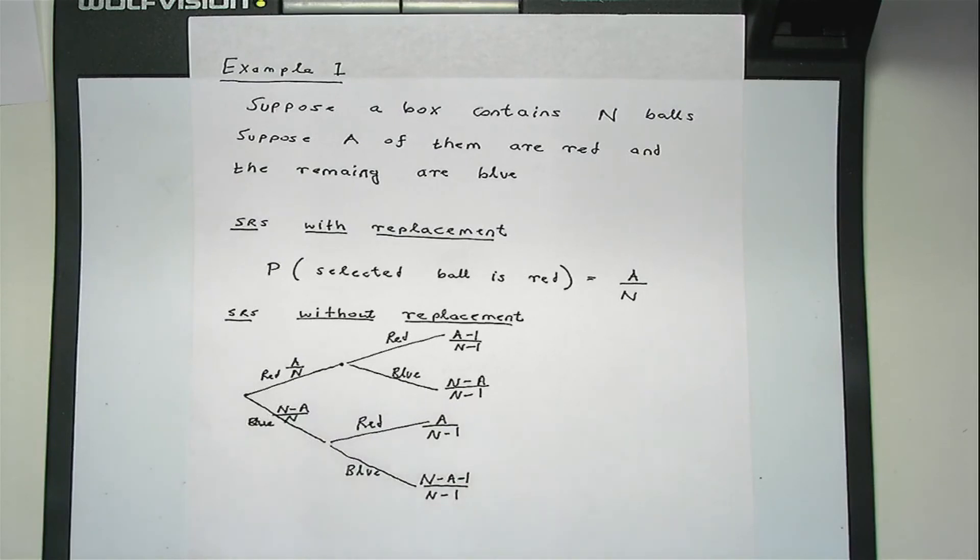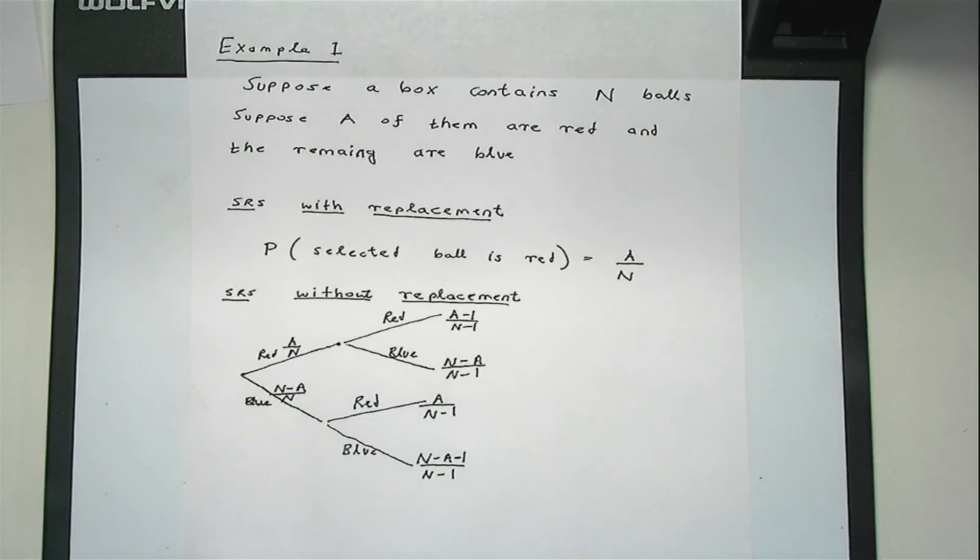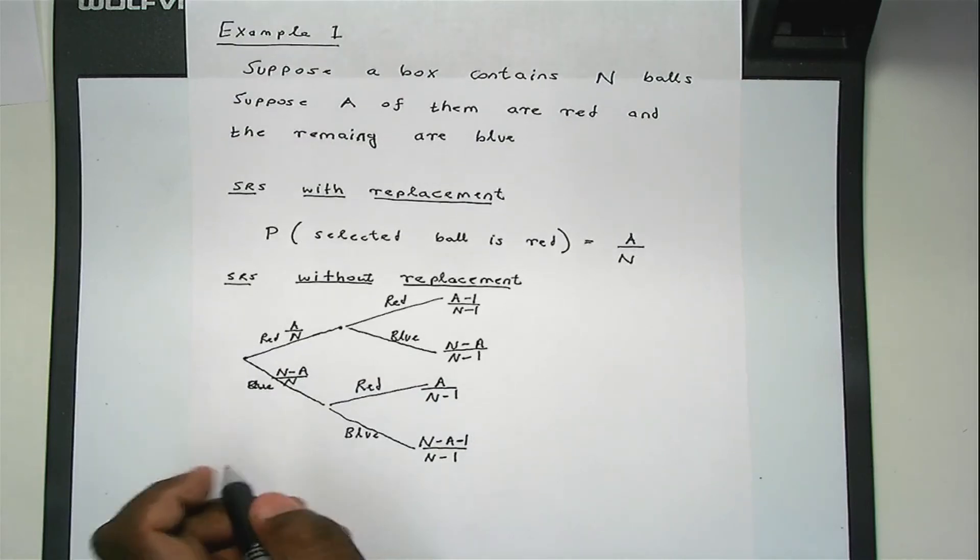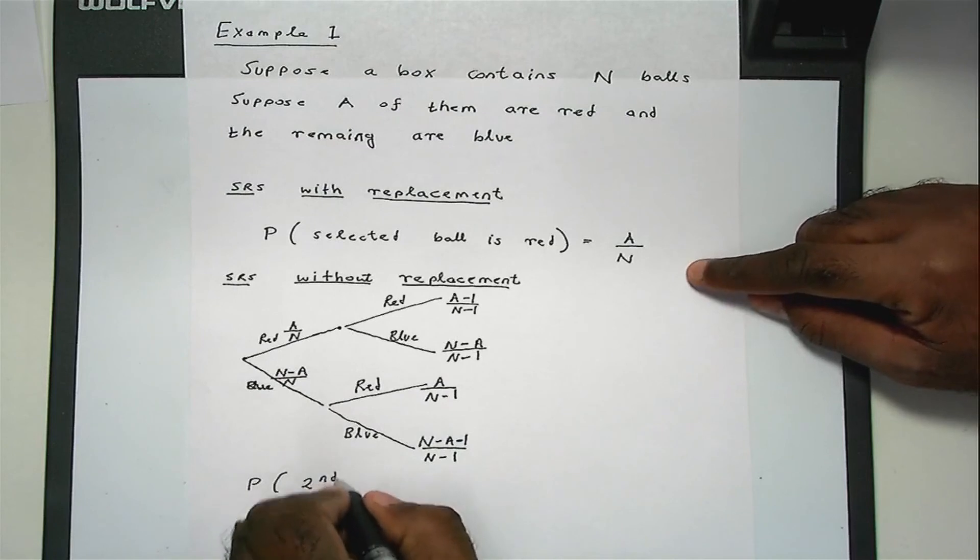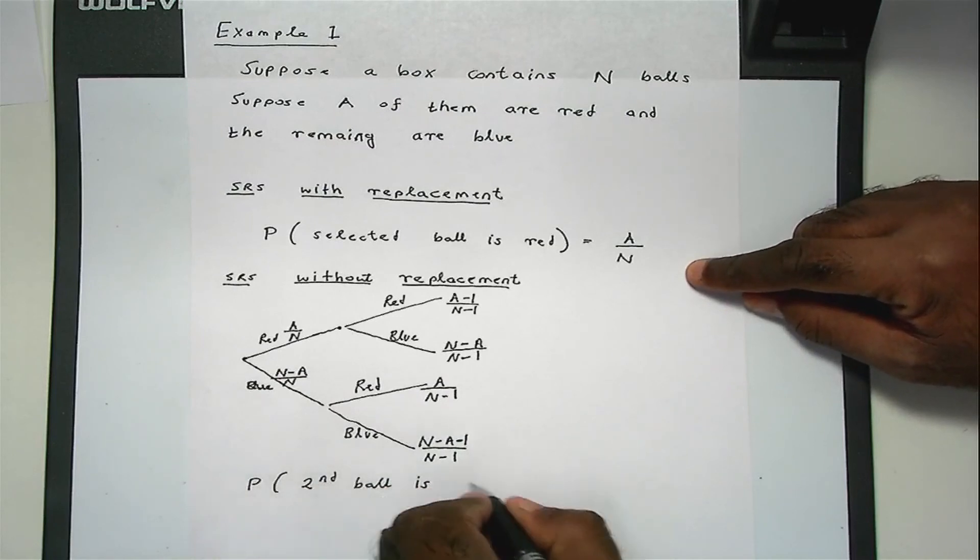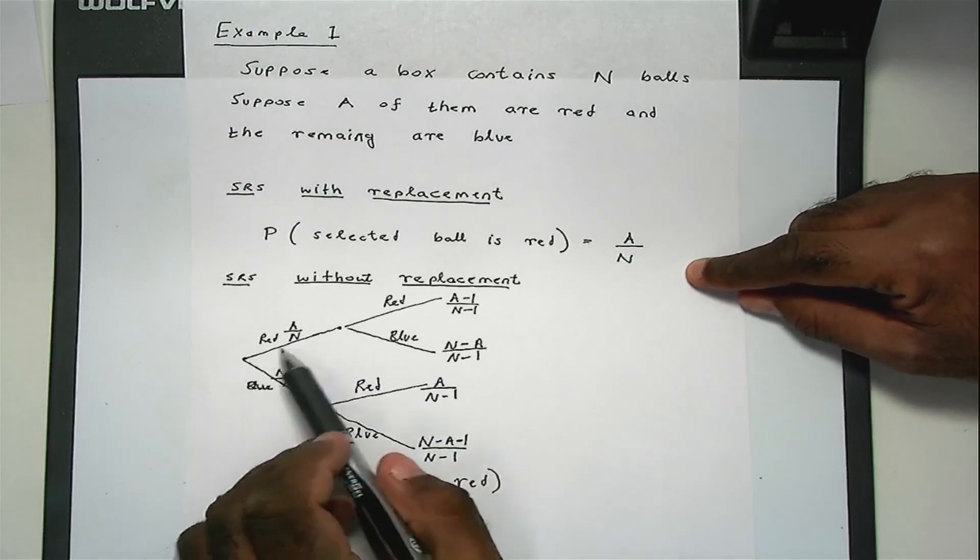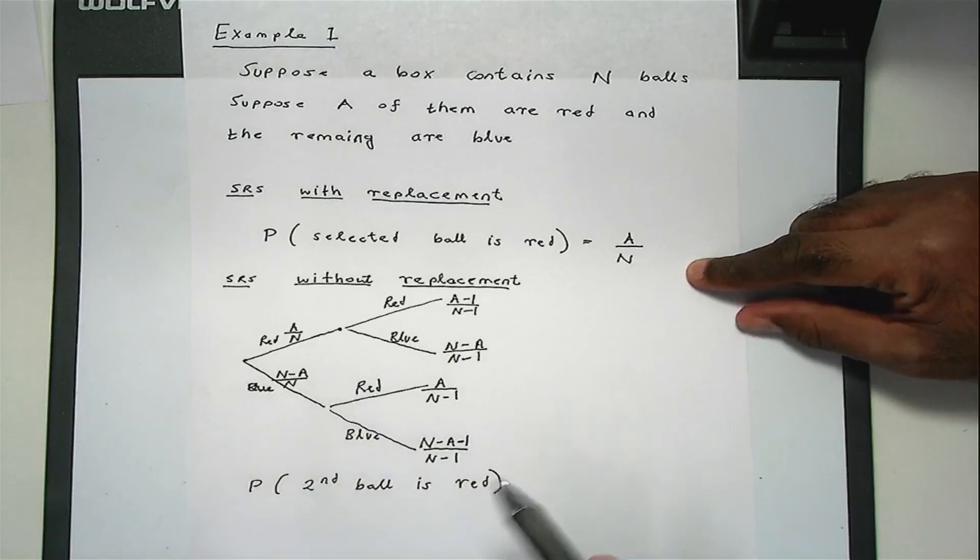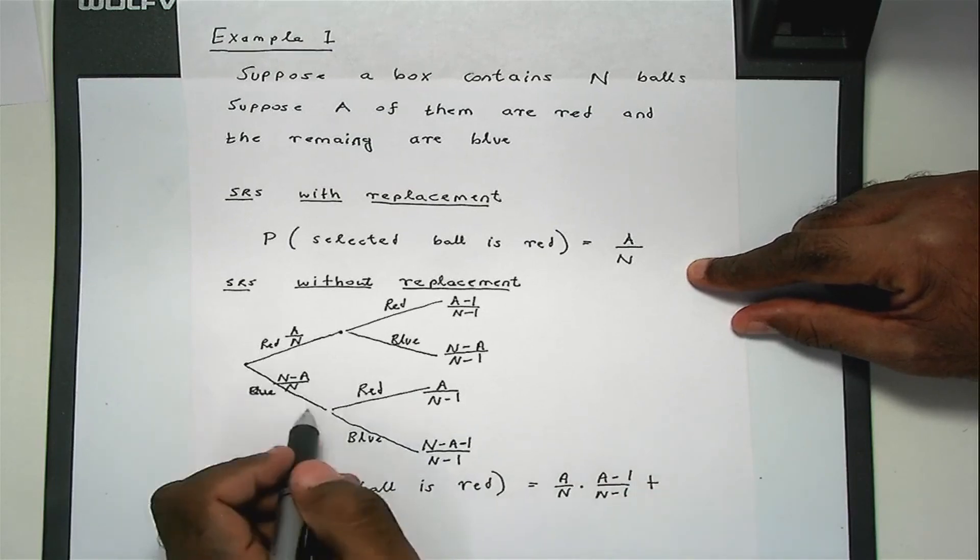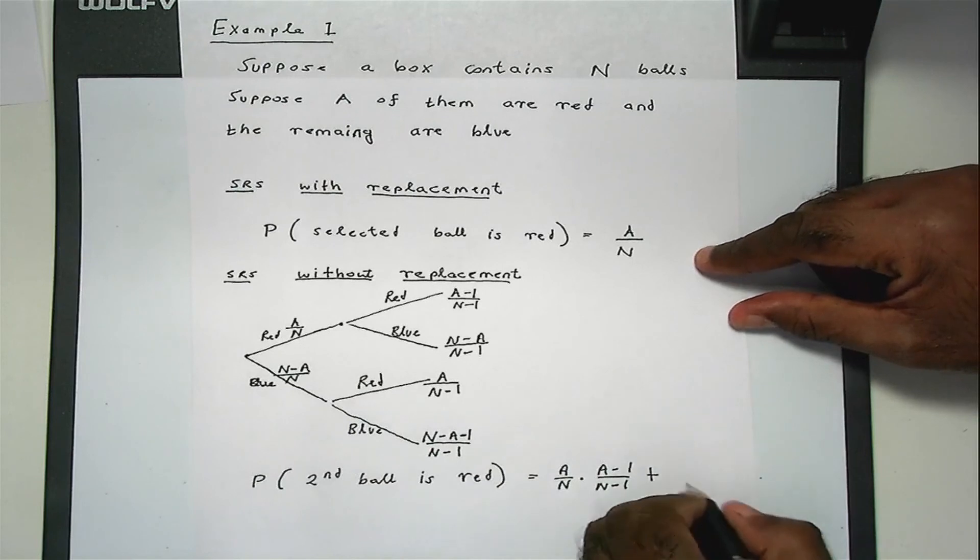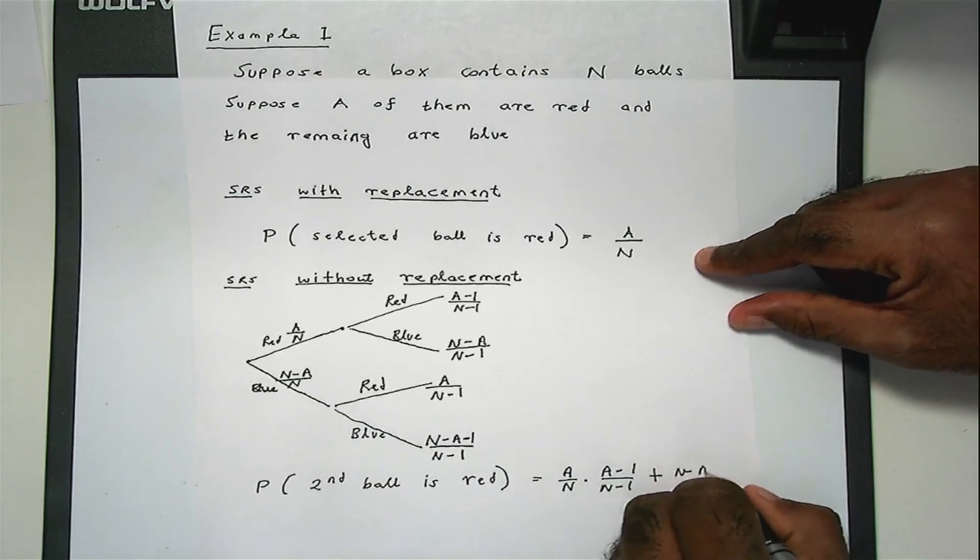So as you can see, the probabilities are changing with the number of selections. So for example, if you want to find the probability that the second ball you selected is red, then you need to multiply these two probabilities. So in other words, it will be A divided by N multiplied by A minus 1 divided by N minus 1, plus the probability corresponding to this, which is N minus A divided by N times A divided by N minus 1.